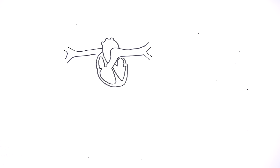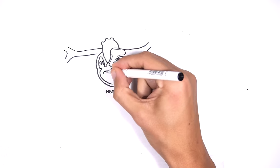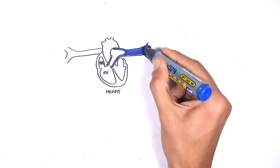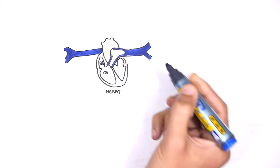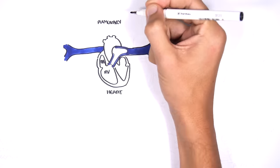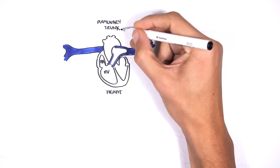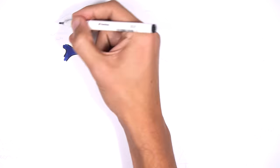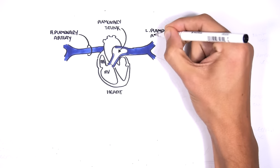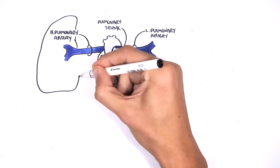Here we have the heart and the heart has four chambers. Here we have the right side which is composed of the right atrium and right ventricle. The right side of the heart receives deoxygenated blood from circulation. The right ventricle will then pump this blood through the pulmonary trunk, which will branch into the right pulmonary artery and the left pulmonary artery before branching even more within the lungs.